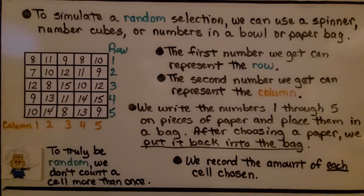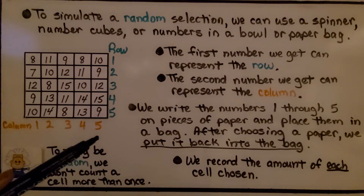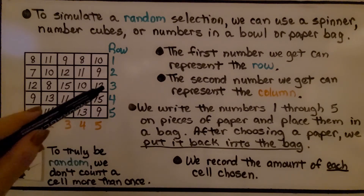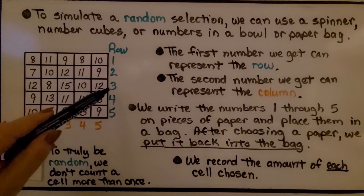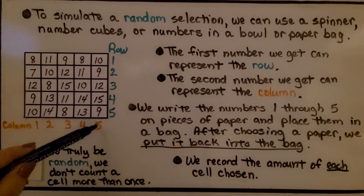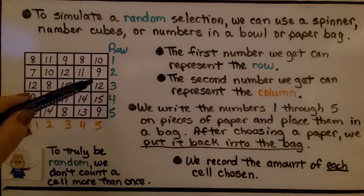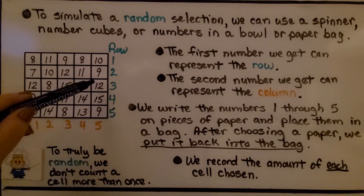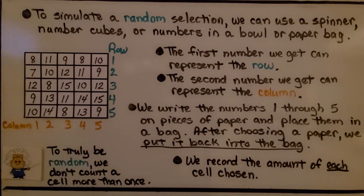After choosing a paper, we put it back into the bag and record the amount of each cell chosen. So the first number I picked was a 3, and the second number I picked was a 5. Row 3 and column 5 meet at the cell that has a 12 in it. That is the number I'm going to record — 12.